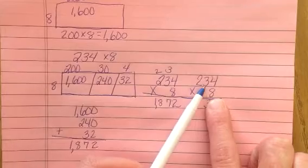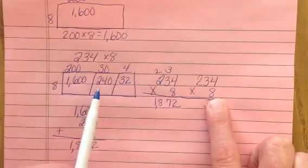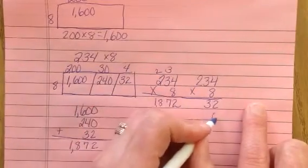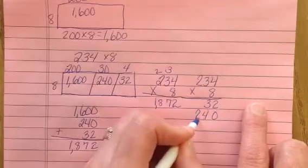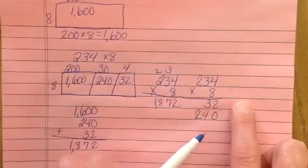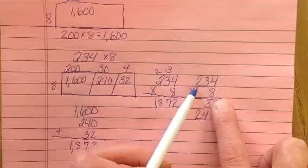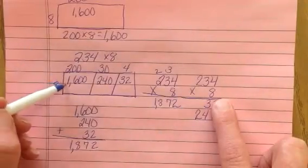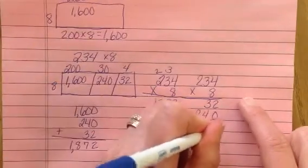8 times, remember this is 30, or 3 tens, that's 240, just what we have in our area model. 2 times 8, or 8 times 200, because this is 200, is 1,600, just like the area model.